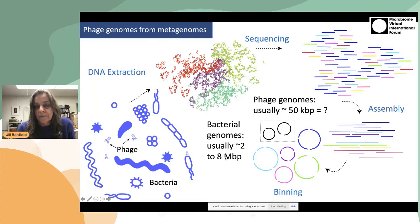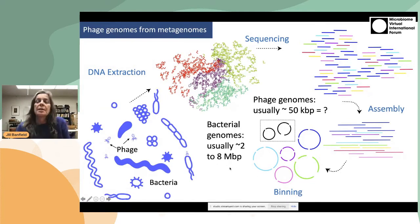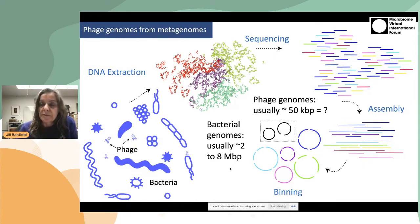Generally speaking, bacterial genomes are in the few megabase size range, and we might expect that phage genomes are on the order of about 50,000 base pairs. But is that actually the case?